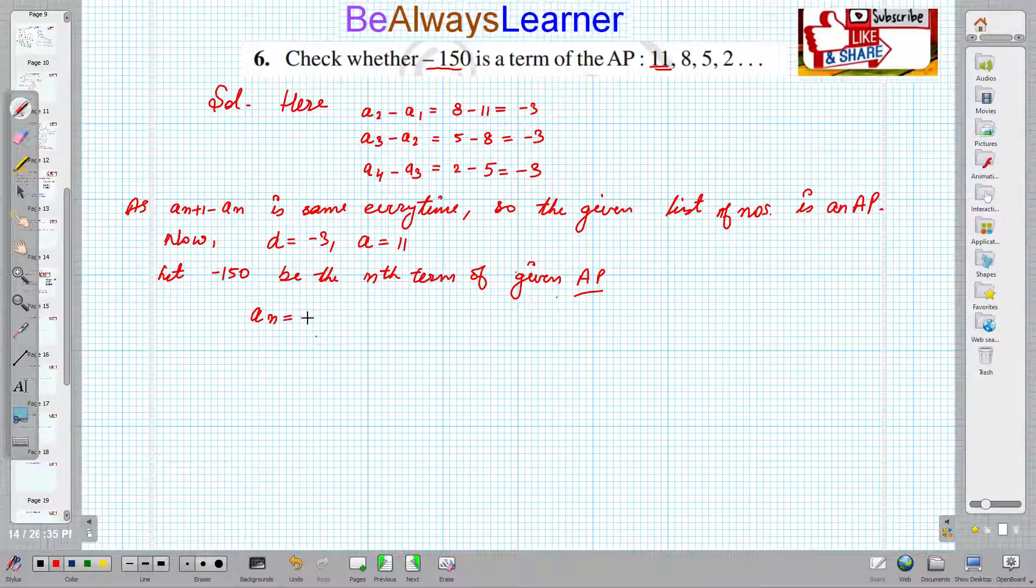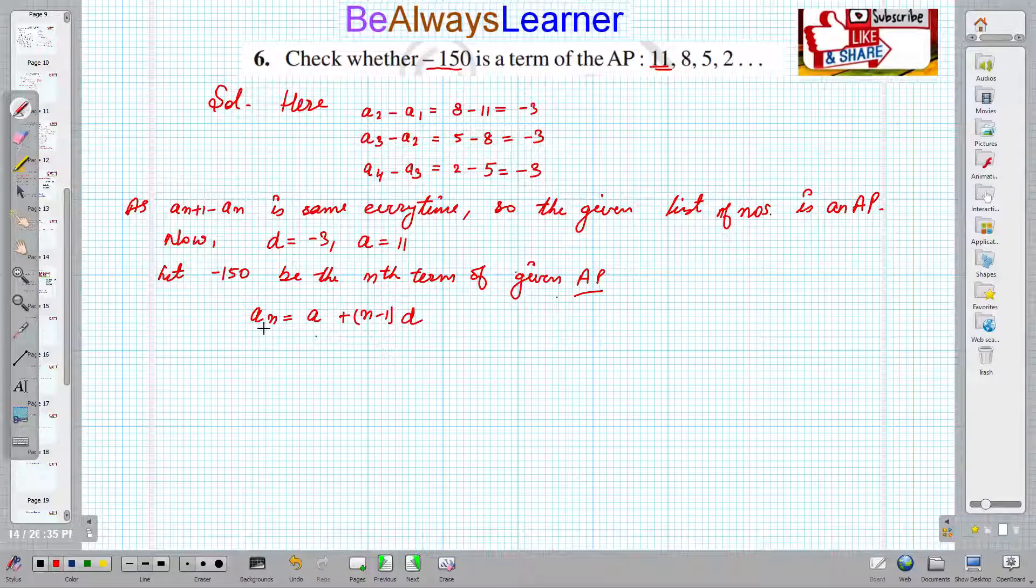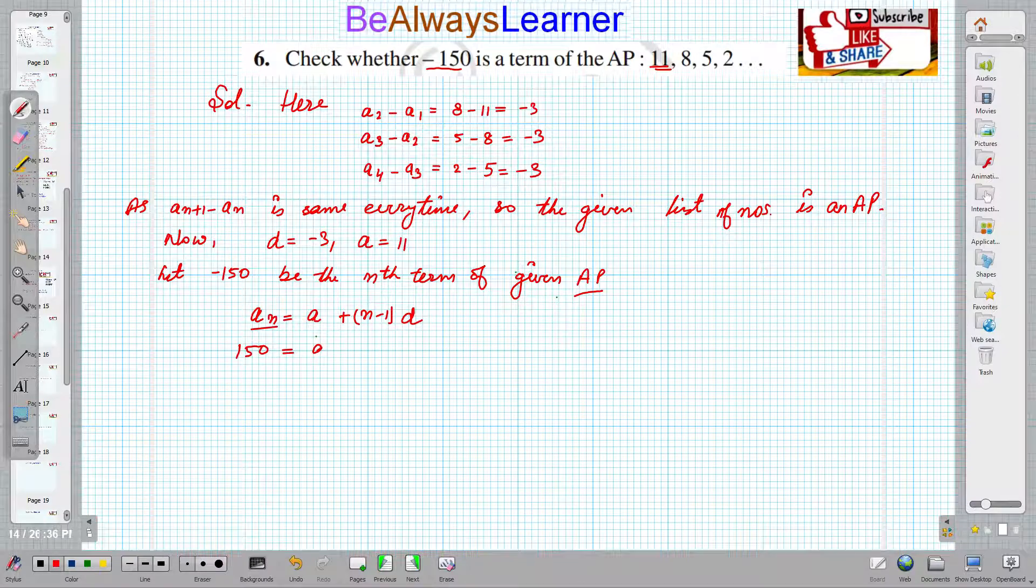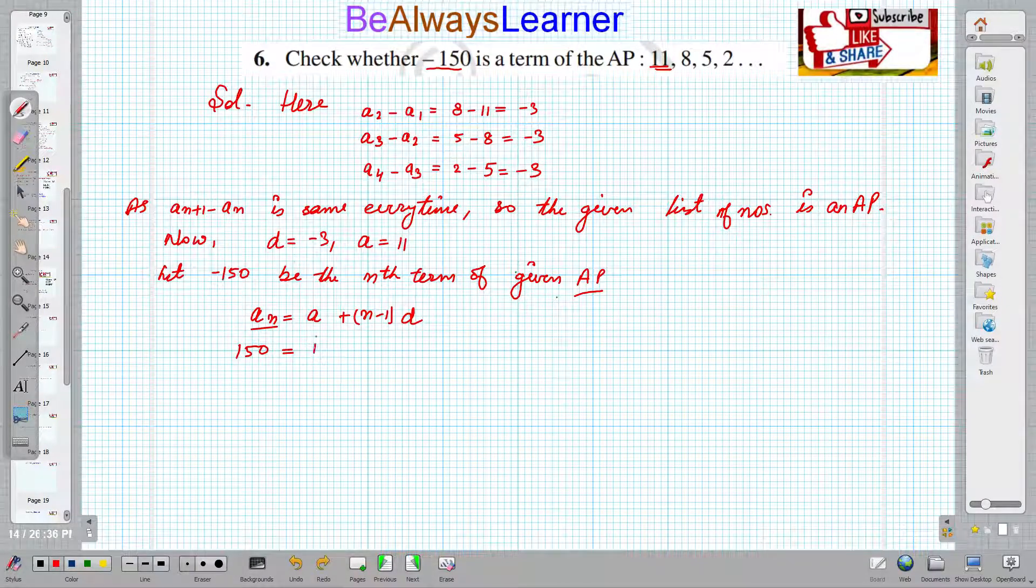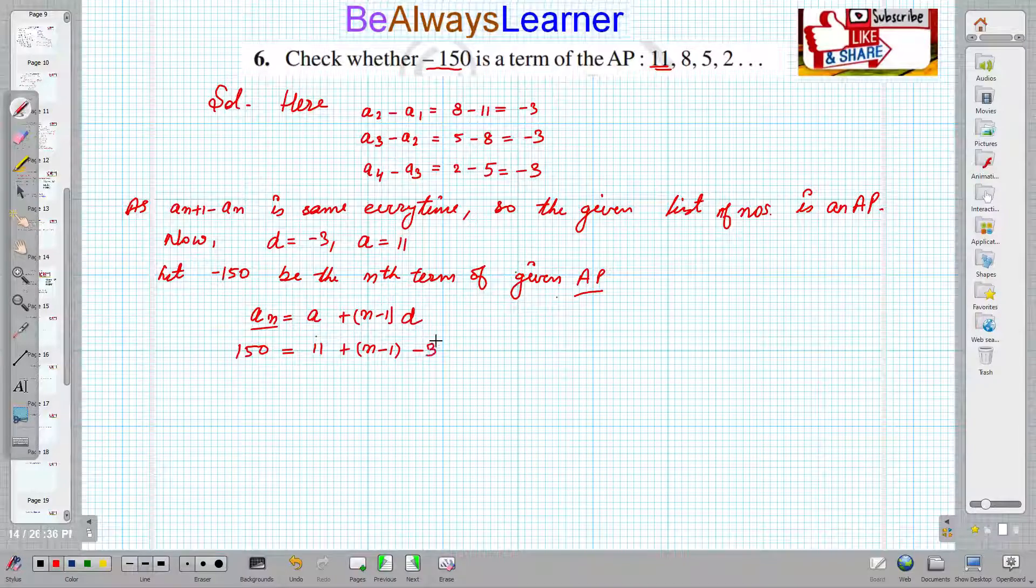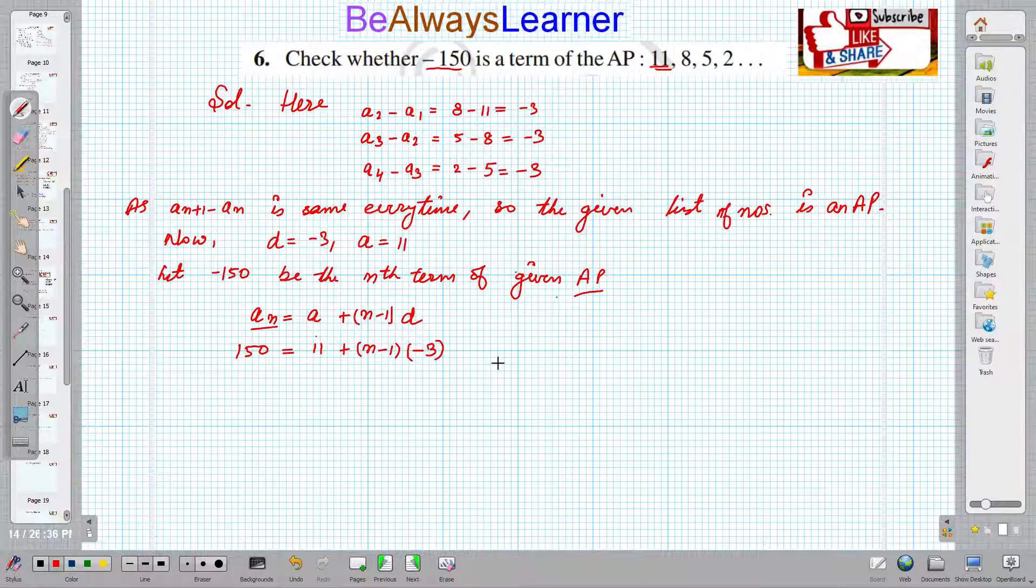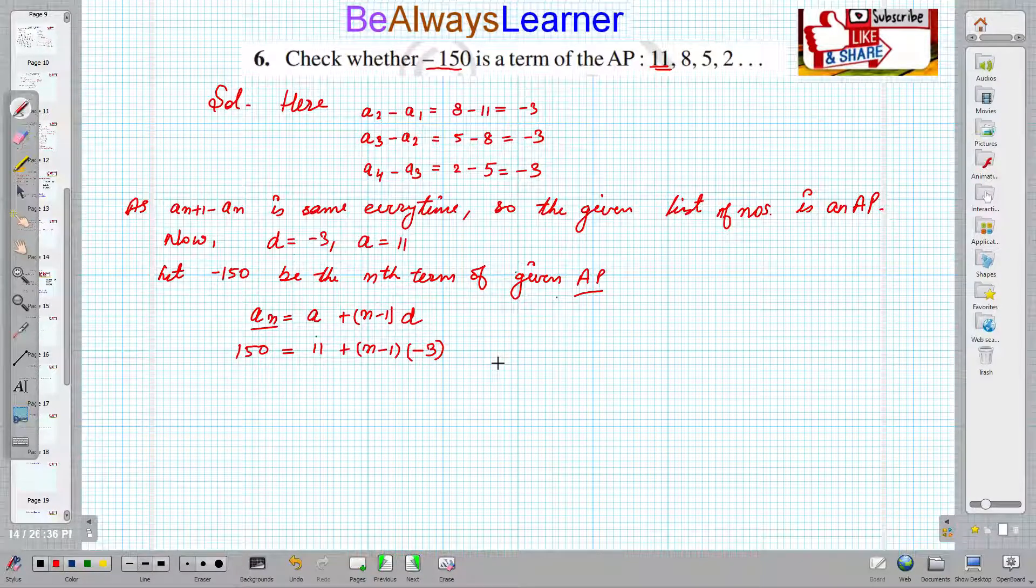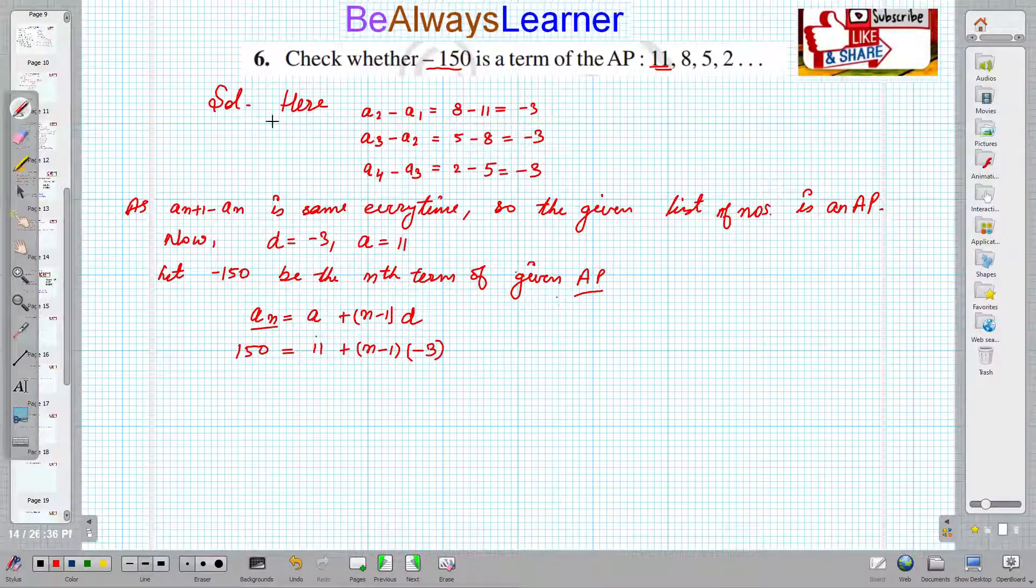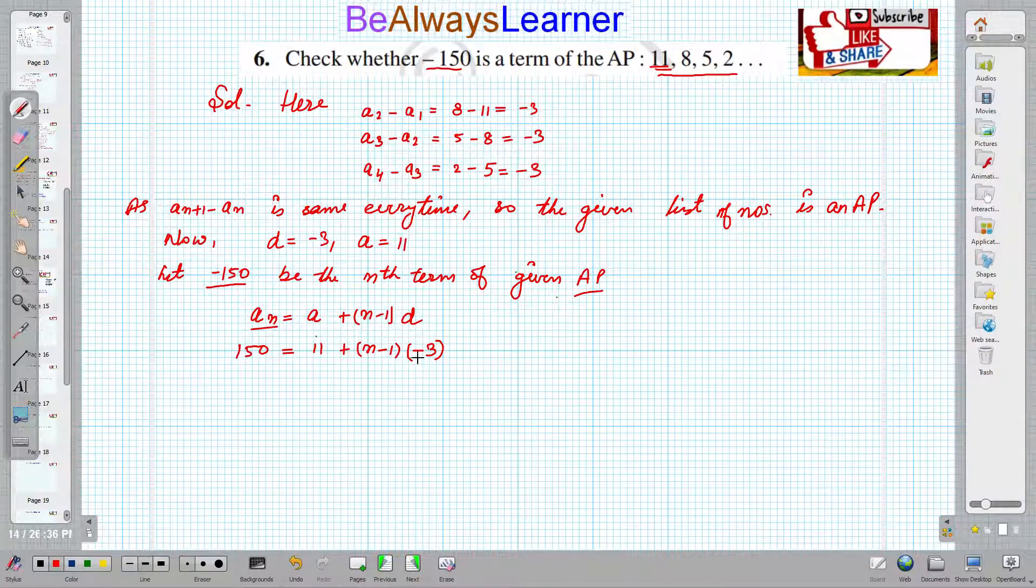For that, we'll implement the nth term formula: An = A + (n-1)D. We assumed An is -150. If the value of n comes out to be a positive integer, then we can say it exists. If it comes out as a fraction, then our assumption that -150 lies in this sequence was wrong. So let's analyze this and find n.